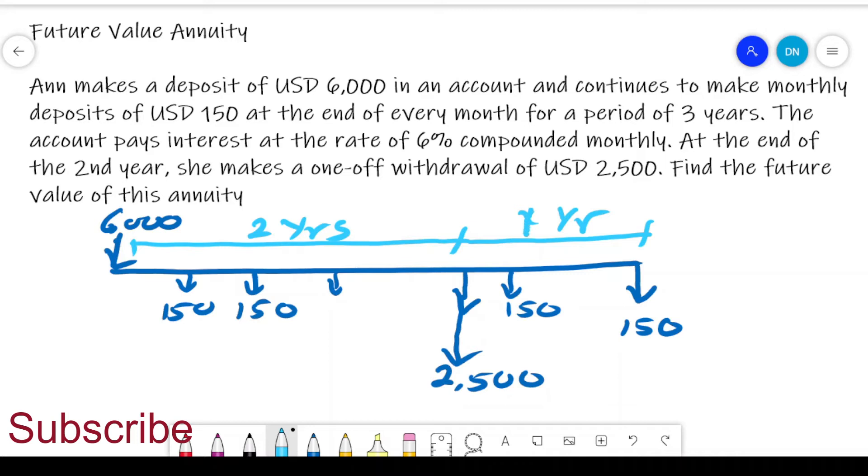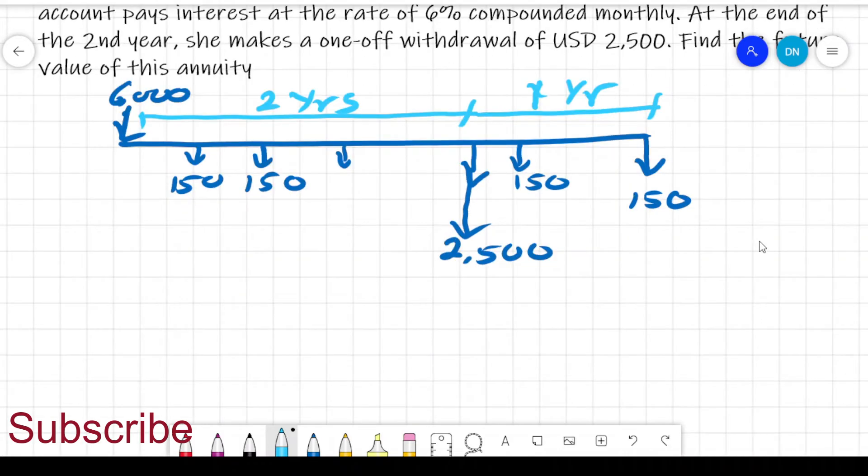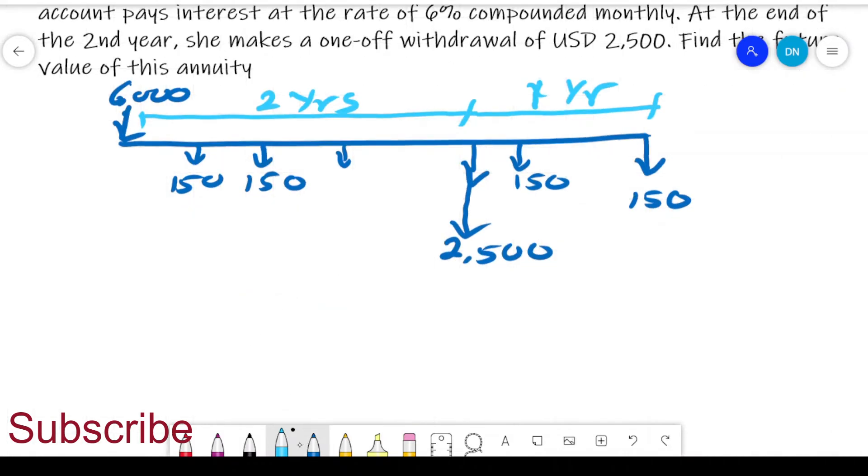Let's see how we can approach this problem. We want to look at the solution in two parts. One of them is we can call this the future value 1 and then the future value 2. We want to see how much money she had accumulated by this time, and then we'll be able to see how much money she'll be having at the end of the time period.